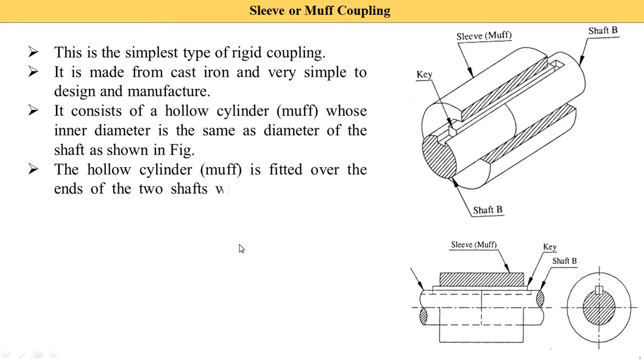The hollow cylinder muff is fitted over the ends of the two shafts with the help of a taper sunk key. On this diagram you can see that the muff is fitted over the shaft, and in between the shaft and the muff there is a taper sunk key. Various types of keys are used in muff coupling, but we use the taper sunk key.